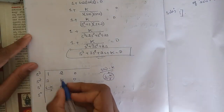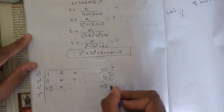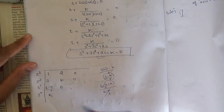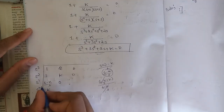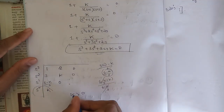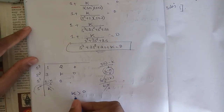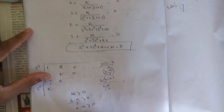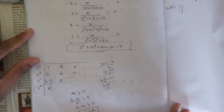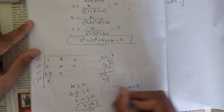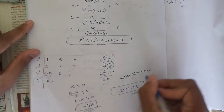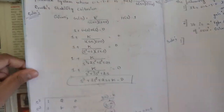The s⁰ row element is: [(6−K)/3 × K − 0] / [(6−K)/3], which simplifies to K. For stability, all first column elements must be positive. So (6 − K)/3 > 0, giving 6 > K, and K > 0. Therefore the range of K for stability is 0 < K < 6.